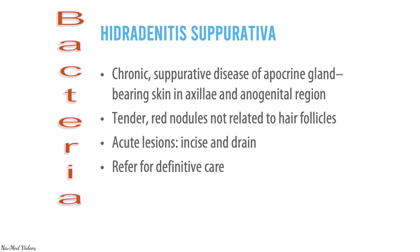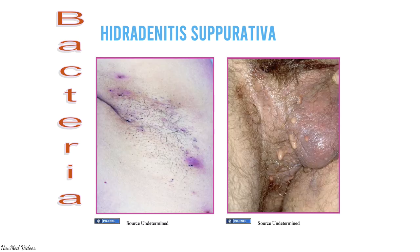Hidradenitis suppurativa is a chronic suppurative disease of apocrine gland-bearing skin in the axillary and inguinal regions. It presents as tender red nodules not related to hair follicles — that's the most important distinguishing feature. For acute lesions, perform incision and drainage and refer for definitive care.